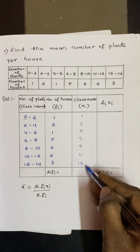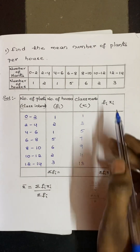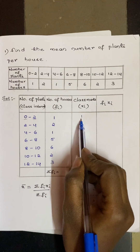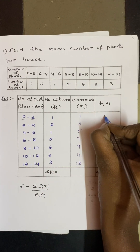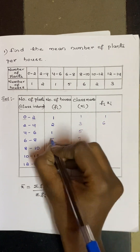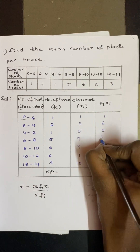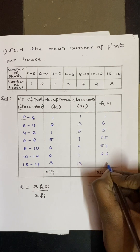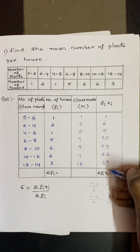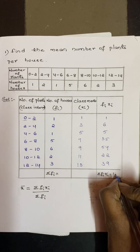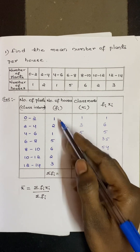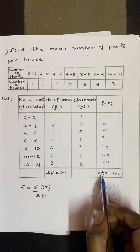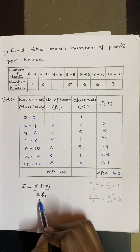Now for fi·xi, we multiply fi and xi for each row: 1×1=1, 2×3=6, 1×5=5, 5×7=35, 6×9=54, 2×11=22, 3×13=39. Adding all fi·xi values gives Σfi·xi = 162, and adding all frequencies gives Σfi = 20.